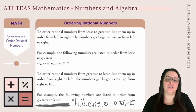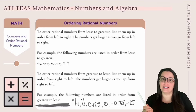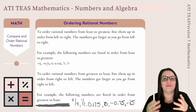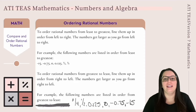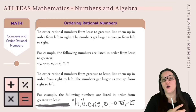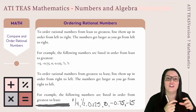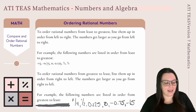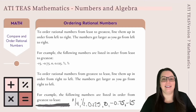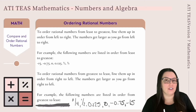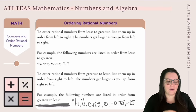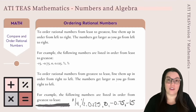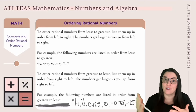Rational numbers can be ordered from least to greatest or greatest to least. To order from least to greatest, we line them up left to right — negative numbers are least (on the left) and positive numbers are greater (on the right). For example: −15, −0.75, 0, 0.125, 1/2, and 3/4. A helpful tip: convert all numbers to decimals when taking the test so you can clearly compare their values.